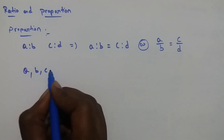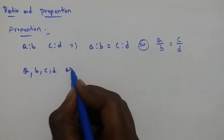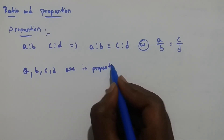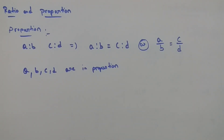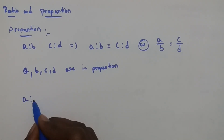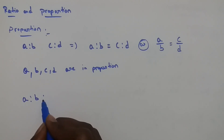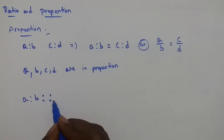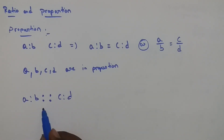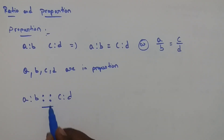A, B, C, D are in proportion. We write this as A:B::C:D. Here, if there are two ratio symbols, it is called proportion.